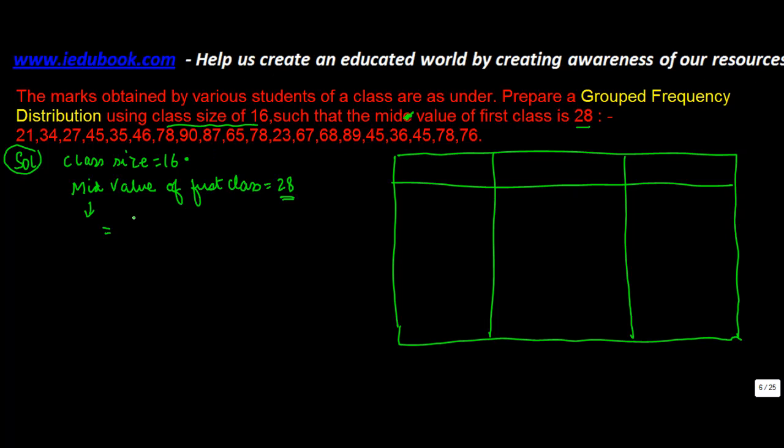So applying the same logic, the mid value of the first class is 28. So we can say that 28 equals lower limit plus class size divided by 2, or lower limit plus 16 divided by 2, which is 8. Hence, the lower limit equals 28 minus 8, which equals 20.